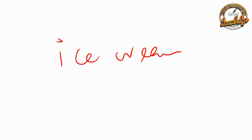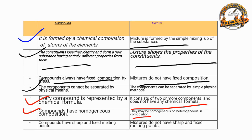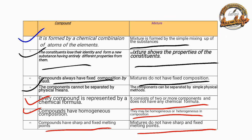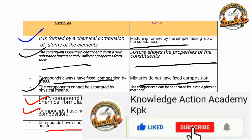A mixture can be either heterogeneous or homogeneous. A compound has a fixed melting point, while a mixture does not have a fixed melting point. A compound is formed by chemical combination in a fixed ratio. Thank you for watching.